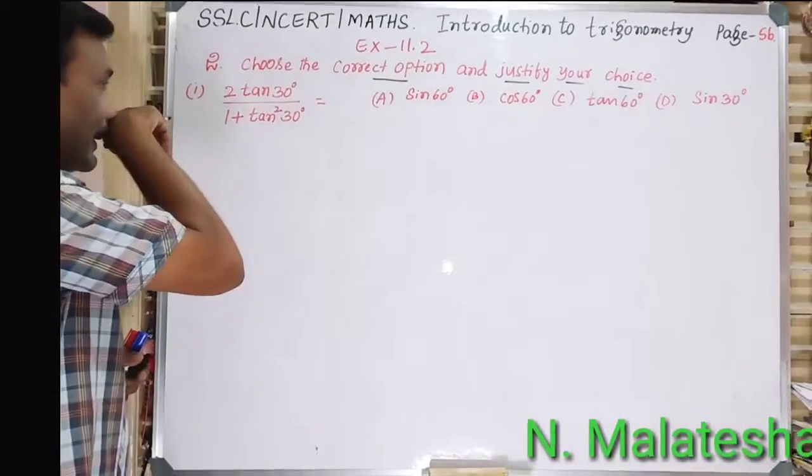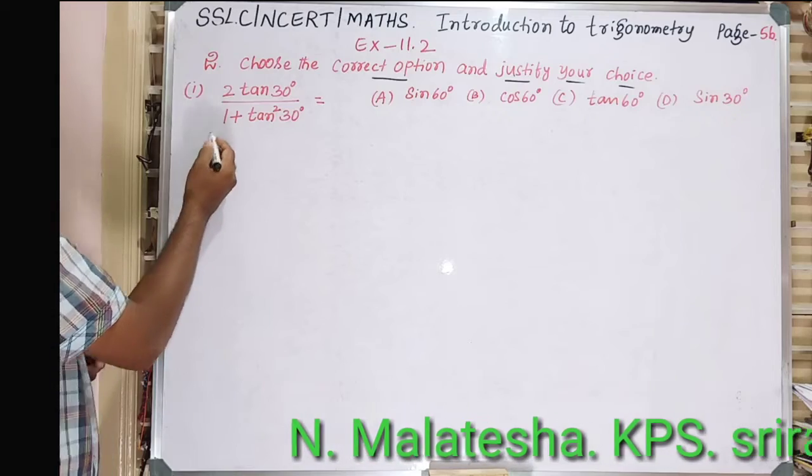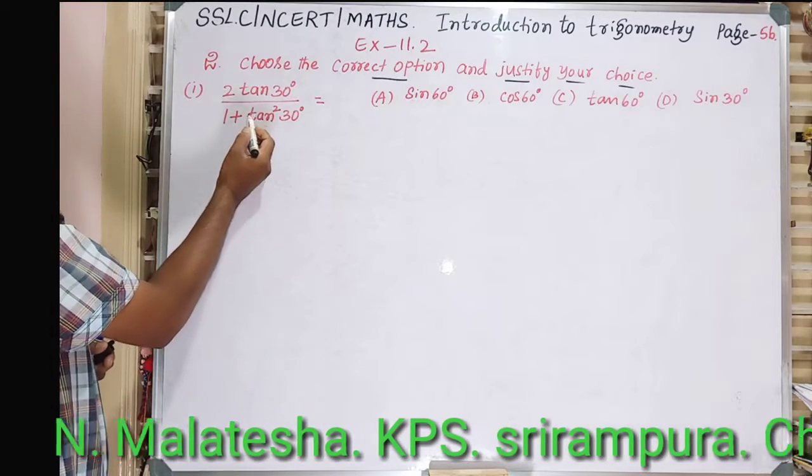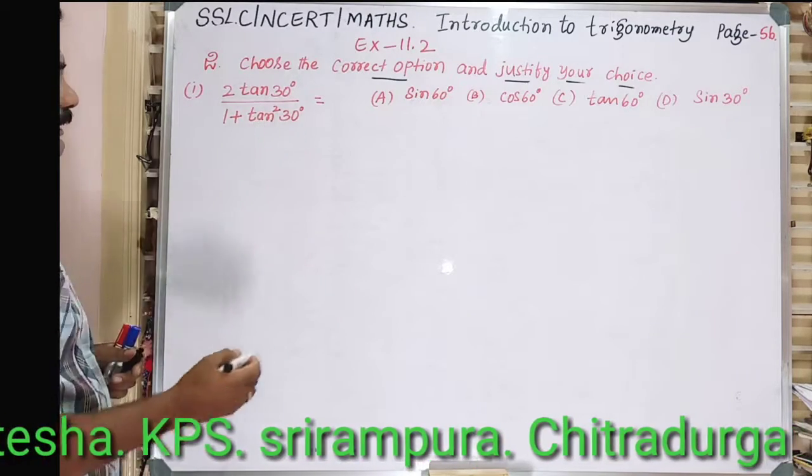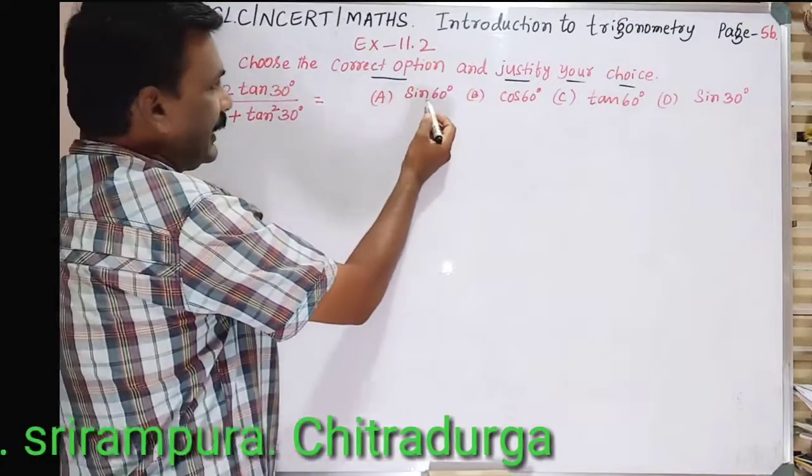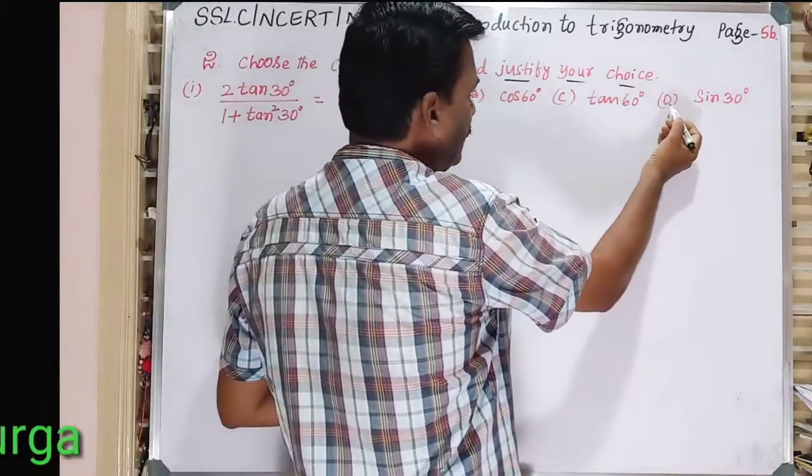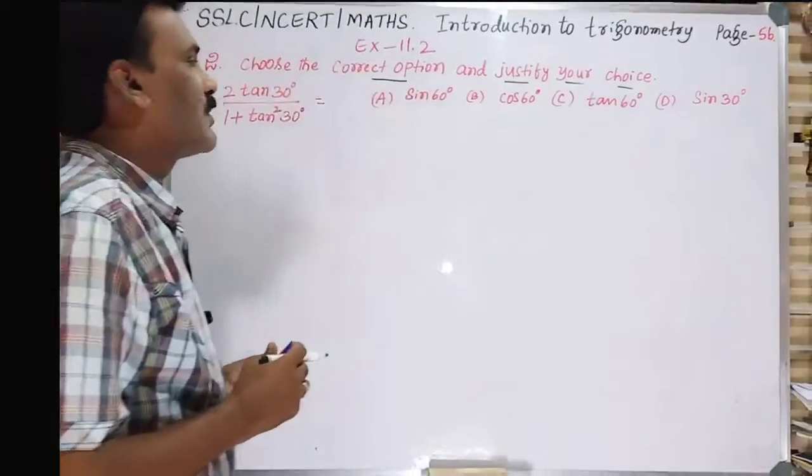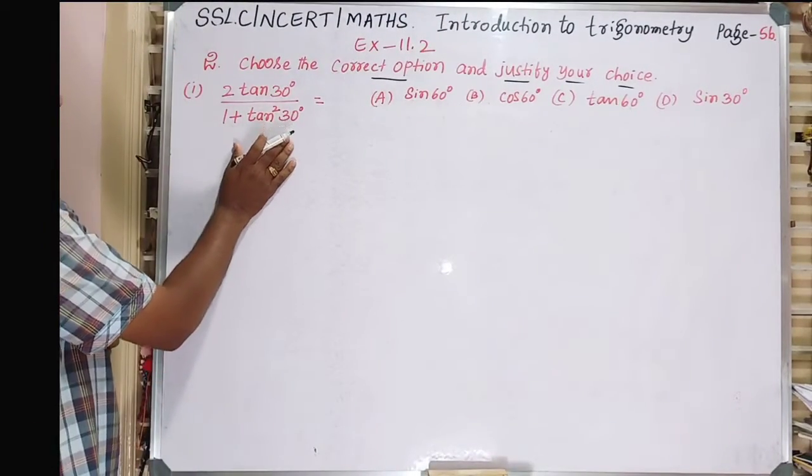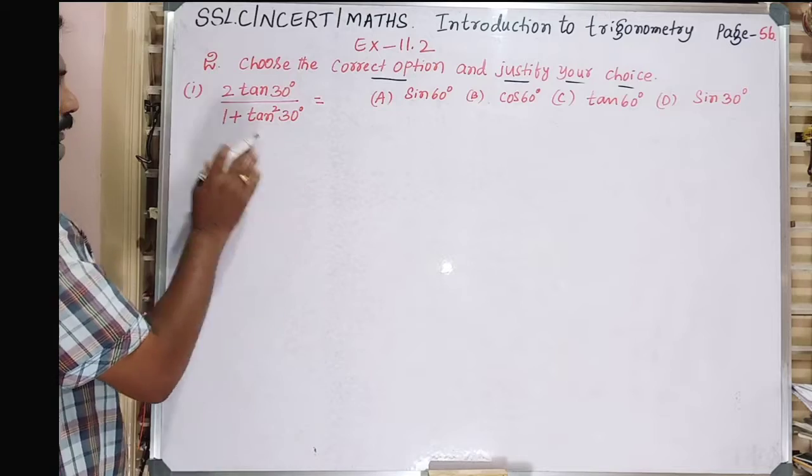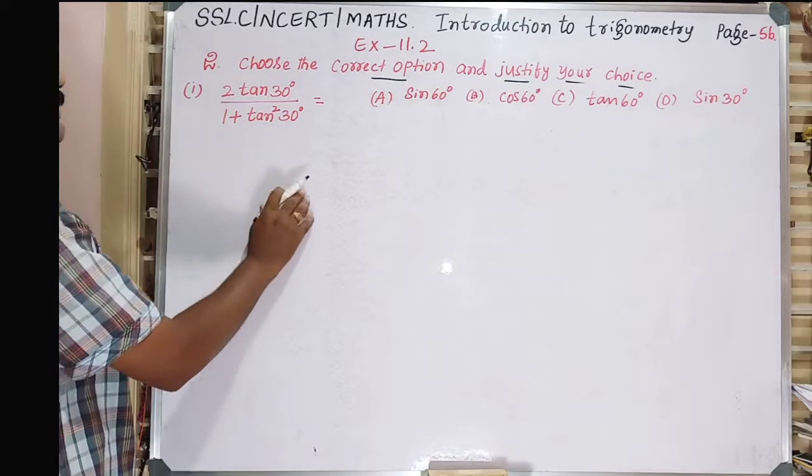So in the first question we have: 2tan30° divided by 1 plus tan²30° is equal to option (a) sin60°, (b) cos60°, (c) tan60°, and (d) sin30°.